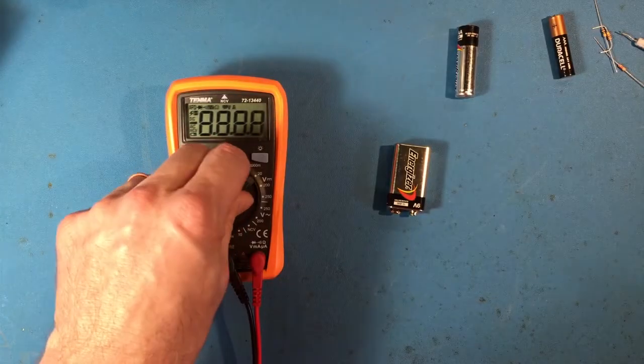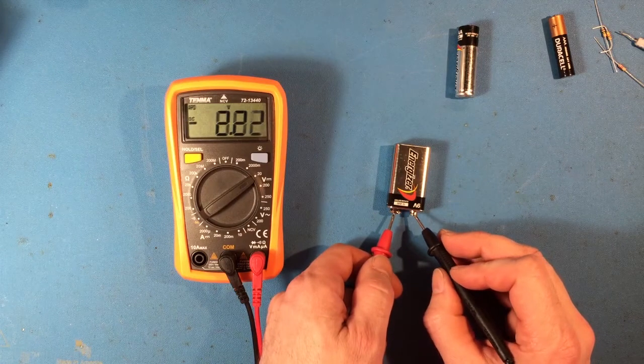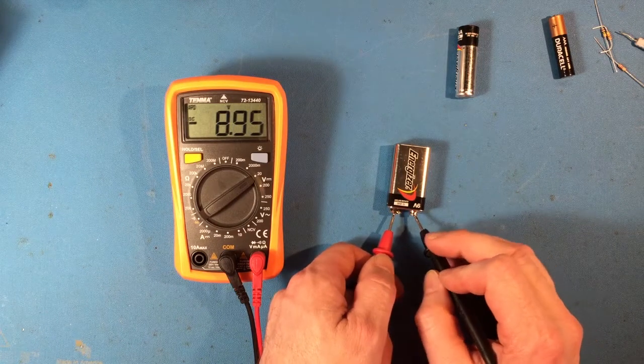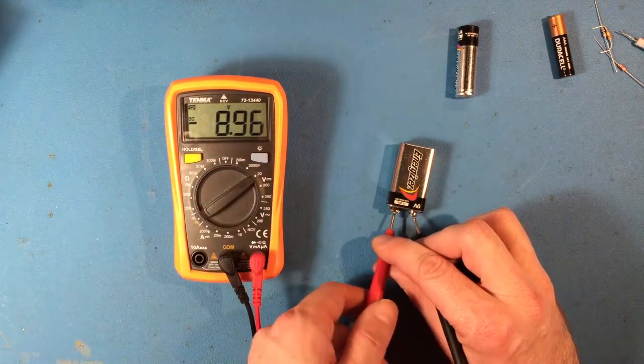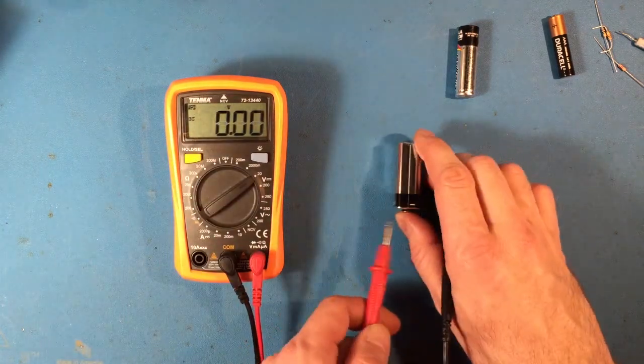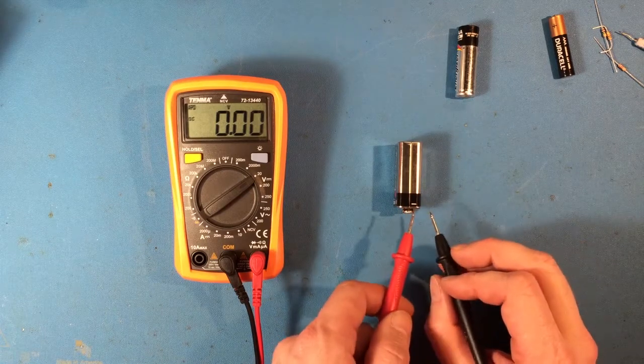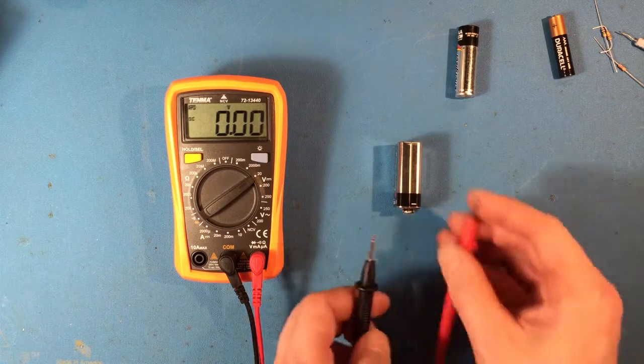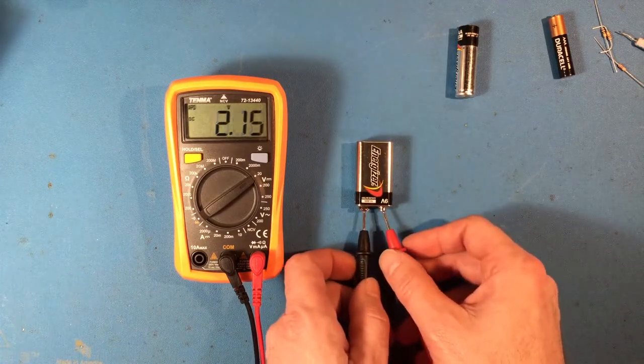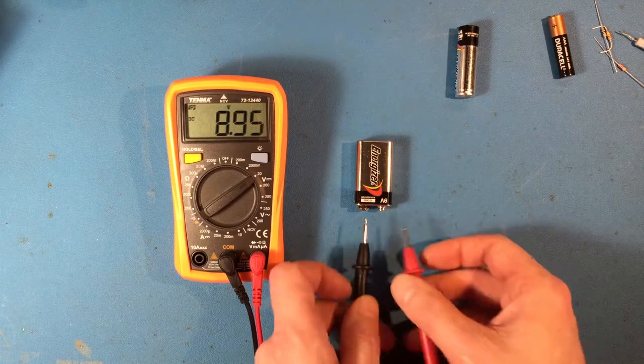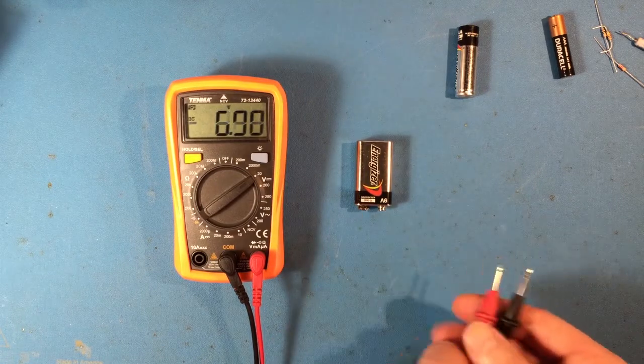So one other thing I just want to show real quick is if I connect my test leads backwards, you can see there's a negative sign that shows up on the meter right there. So that negative sign is saying that the voltage is negative. And you can see that the positive terminal was connected to the negative, so that makes sense. And if we flip them around so that the signs are correct, now we're seeing positive voltage. So a good way to check things out. Important to take note of that.